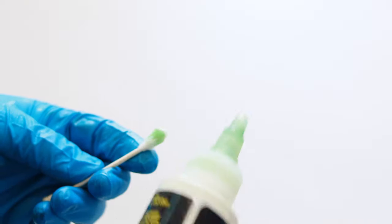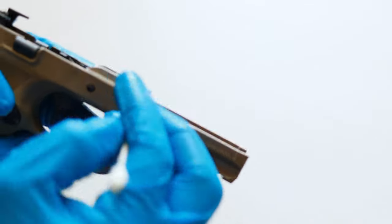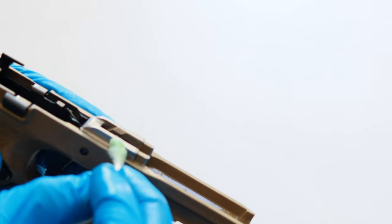Now that I've loosened up all the fouling, I'm going to go through it in fine detail. I add CLP to the cotton swab. I'm going to pay particular attention to the rails and anything that shows metal on metal wear.